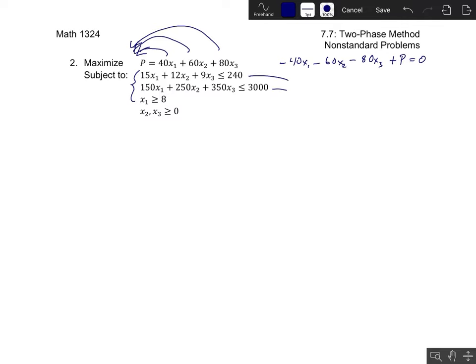Now for our constraints, these first two constraints are just going to get ordinary slack variables because those are standard constraints. So the first constraint equation would be 15x1 plus 12x2 plus 9x3 plus our first slack variable is equal to 240. Similarly for the second one, I'd get 150x1 plus 250x2 plus 350x3 plus our second slack variable is equal to 3000.